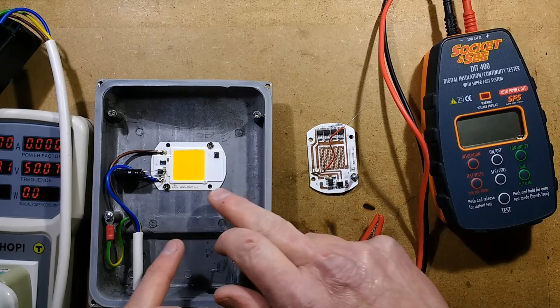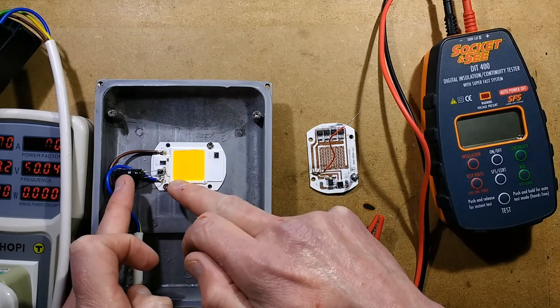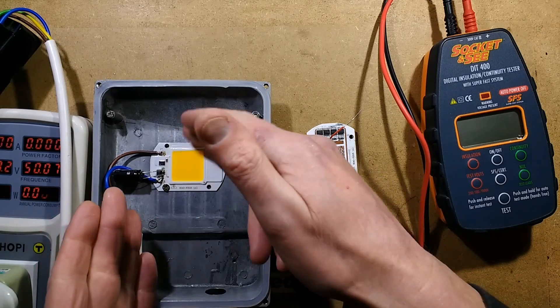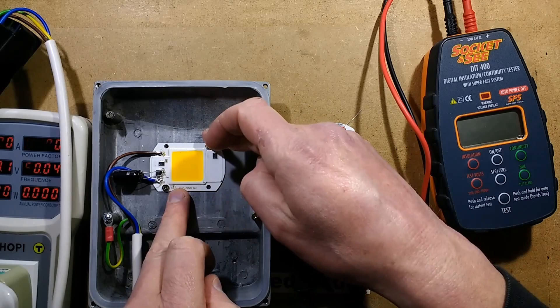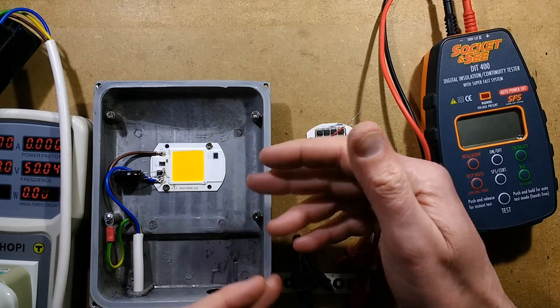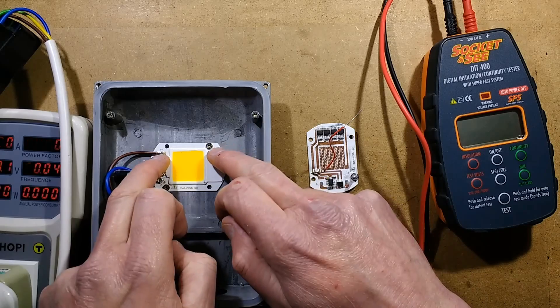The other question was what would happen if a capacitor was added to the LED just after the rectifier to smooth the voltage. Ultimately that's going to increase the voltage quite dramatically from an RMS value of about 240 volts to about 330 volts, so it may make these chips fail.